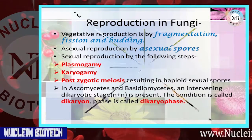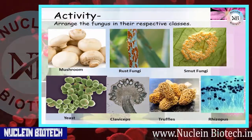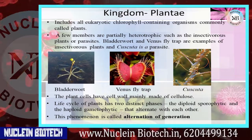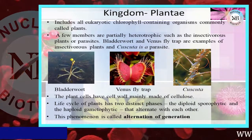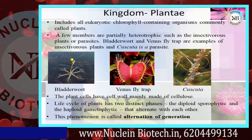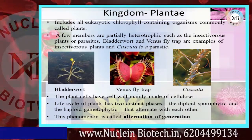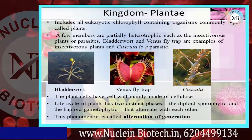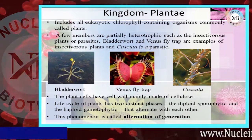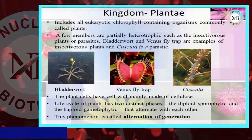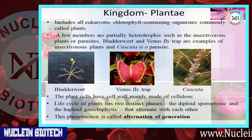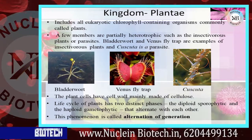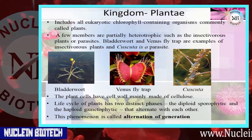Activity: arrange the fungi in their respective classes. Kingdom Plantae includes all eukaryotic, chlorophyll-containing organisms. A few members are partially heterotrophic, such as insectivorous plants or parasites — bladderwort and Venus flytrap are examples of insectivorous plants. Plant cells have cell walls mainly made of cellulose. The life cycle has two distinct phases: the diploid sporophytic and the haploid gametophytic, which alternate.